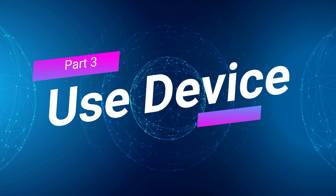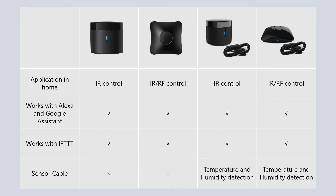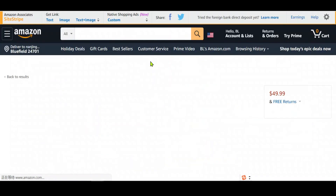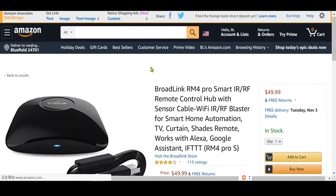Part 3: Use Device. Now we can start to use the device. The RM4 Mini and RM4 Pro are totally new generation products from Broadlink in 2020. The RM4 Mini is an IR universal remote, while the RM4 Pro is an IR and RF universal remote. The RM4 Mini with sensor cable and RM4 Pro with sensor cable support external temperature and humidity detection of the room where the device is located, which will be displayed in the Broadlink app. You can easily set triggers, such as turning on your air conditioner automatically when the temperature rises. These special packs only sell on the Broadlink online store on Amazon.